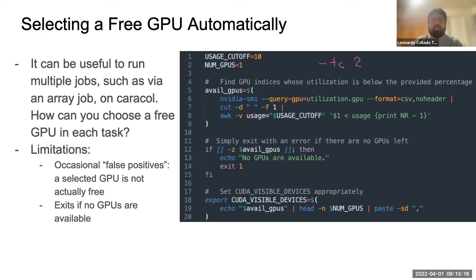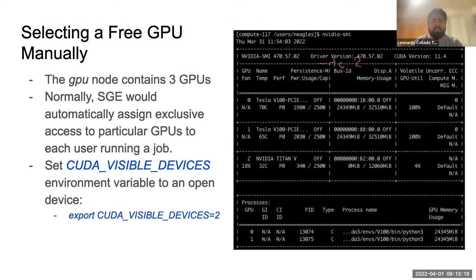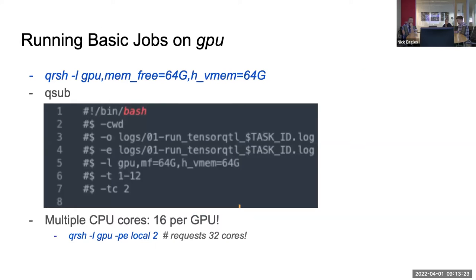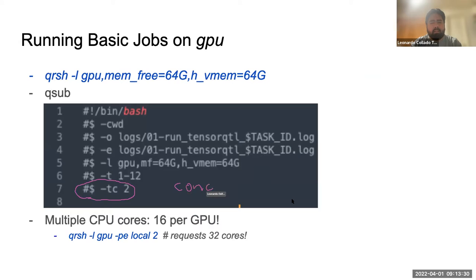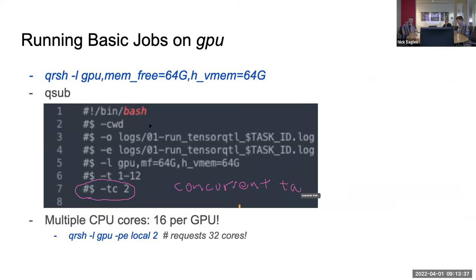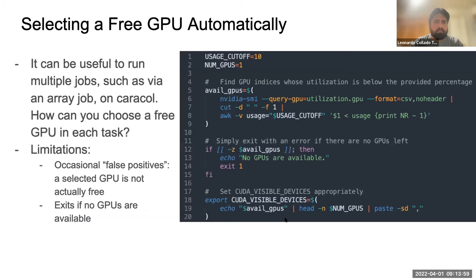Going back to the qsub screenshot: the dash-tc argument controls the number of concurrent tasks. In this example, dash-T runs tasks one through 12, and dash-tc two means two tasks at once. When running on the GPU, you don't want to exceed three, because the automated GPU selection code will just exit if no GPUs are available. It's a roundabout solution for something that would normally be managed by the scheduler.